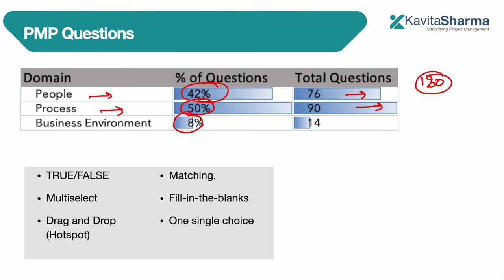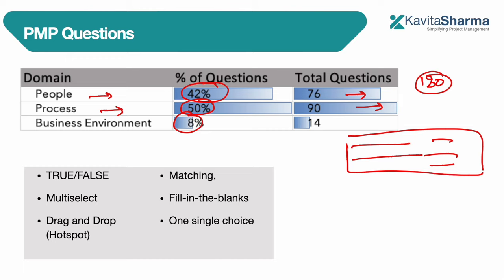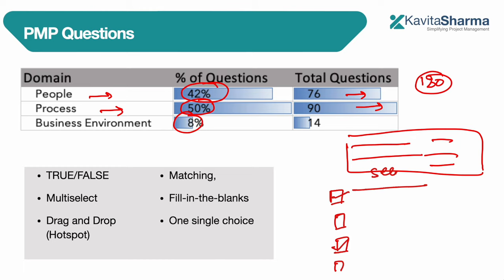The question types include true and false questions — you'll always have a big scenario with radio buttons. Then there are multi-select questions with checkboxes where it says 'select 2,' so you can only select 2. There are also drag and drop questions, also called hotspot questions, where you have a diagram on screen and some text that you need to drop at the right place. You'll see around 4 to 5 of those.